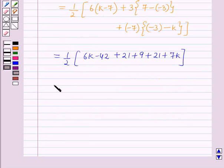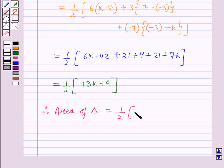Which is further equal to ½ times, and on solving this we get 13k plus 9. Therefore area of the triangle is equal to ½ times (13k + 9).